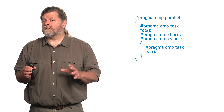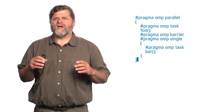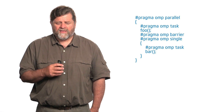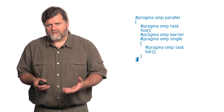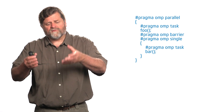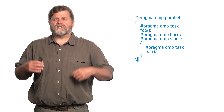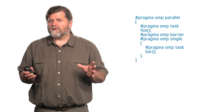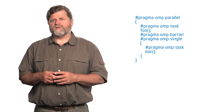The next construct is really common. In this case, I have just one thread create the task using pragma OMP single. So one thread creates a task with pragma OMP task, which calls function bar. There's a barrier at the end of the single construct because I didn't use nowait, so everyone waits until the tasks are done before continuing. That's the task construct.